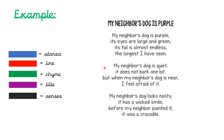My neighbour's dog is purple, its eyes are large and green. Its tail is almost endless, the longest I have seen. My neighbour's dog is quiet, it does not bark one bit. But when my neighbour's dog is near, I feel afraid of it. My neighbour's dog looks nasty, it has a wicked smile. Before my neighbour painted it, it was a crocodile.